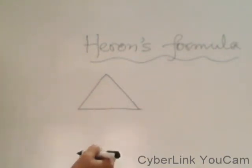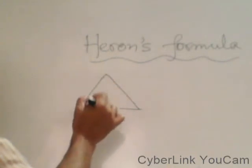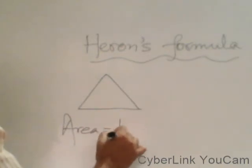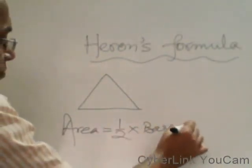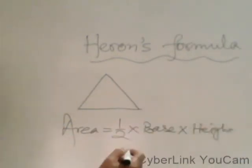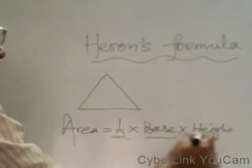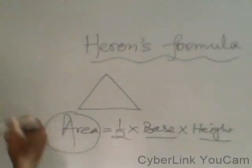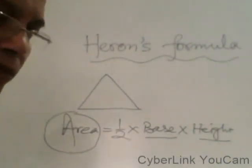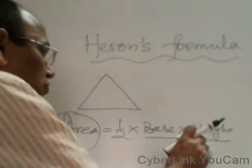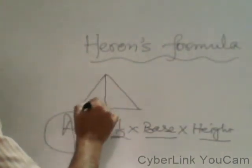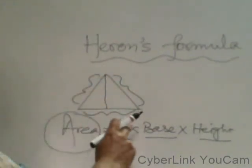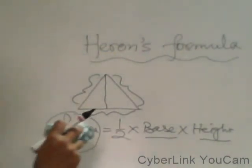A triangle is a three-sided closed figure. To find the area of a triangle, we know that area equals half into base into height. In this formula, you have to know the base and height of the triangle. But if height is not given — only the base and the other two sides are given — you cannot apply this formula in every sum.